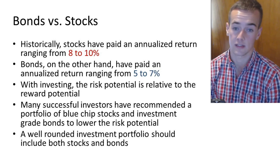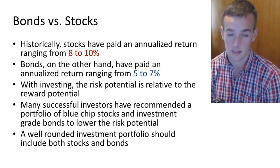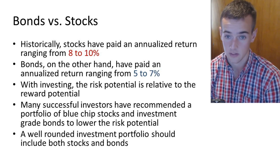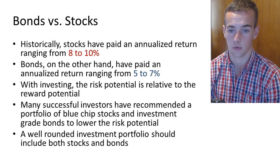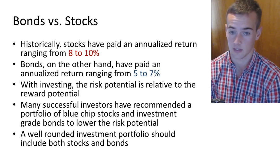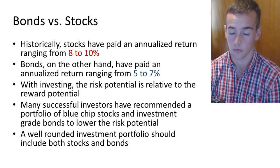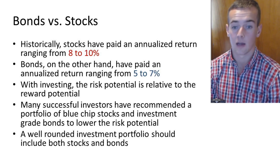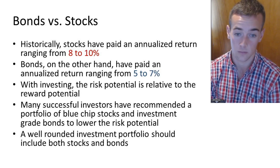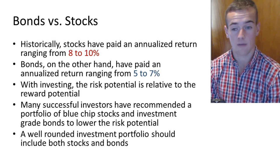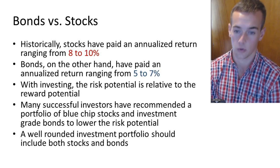Historically speaking, stocks have paid an annualized return ranging from 8 to 10% over the last 100 years. Bonds, on the other hand, have paid an annualized return ranging from 5 to 7%. It's best to have a mix of both in your portfolio. With investing, the risk potential is relative to the reward potential — when you have a higher risk associated with an investment, there is a higher potential return.